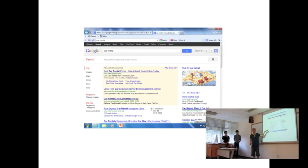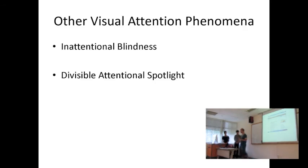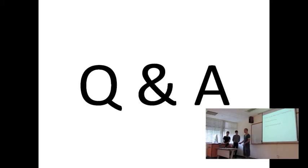So lastly, I'm going to move on to other visual phenomena. The spotlight model and the zoom lens model are not comprehensive in understanding human attention. So there's also other factors such as inattentional blindness as well as divisible attentional spotlight. Just as Ryan has mentioned earlier that as human beings we are able to multitask our attention onto up to three or four different areas at the same time. So with this, I'll end today's presentation. If there's any questions, we will be over here to take them. Thank you.